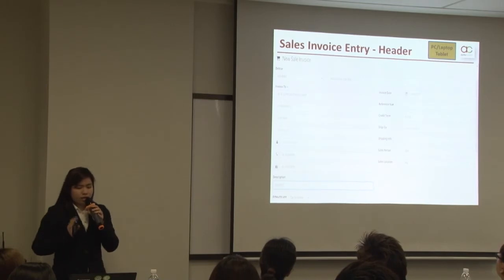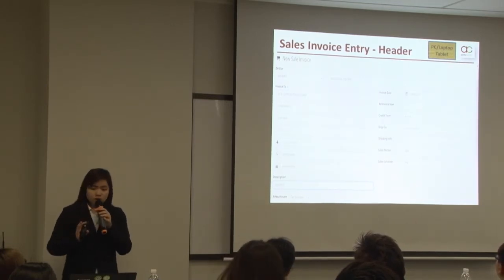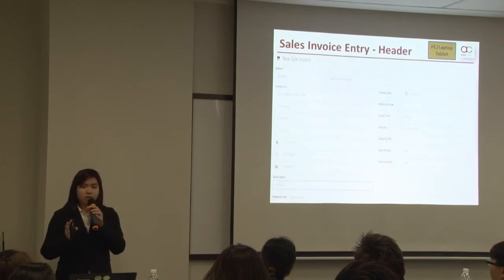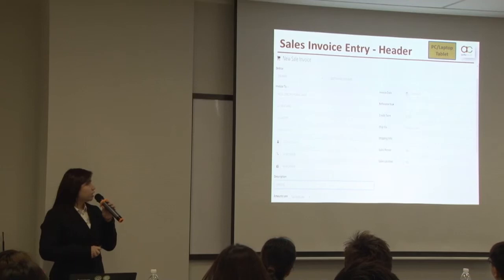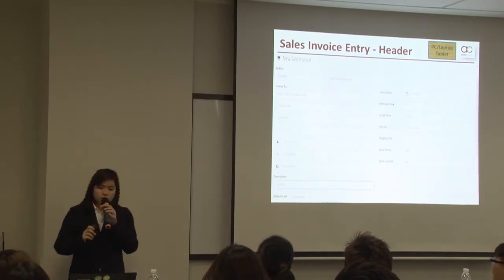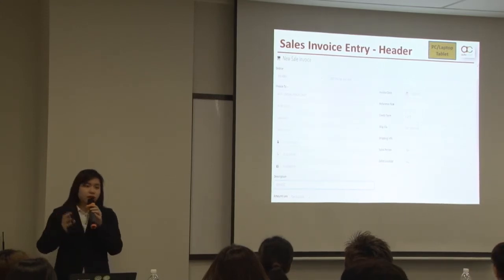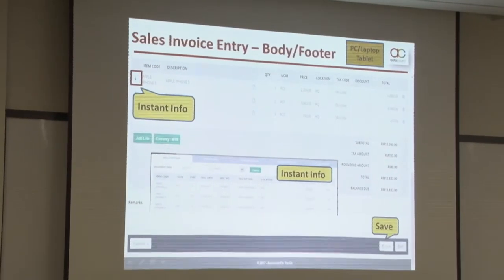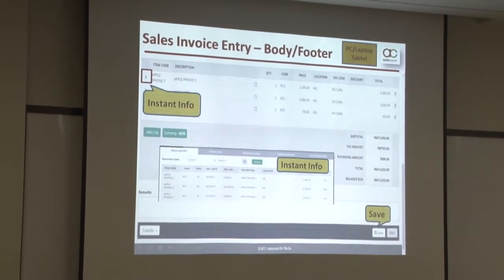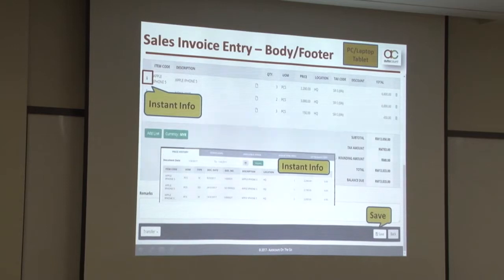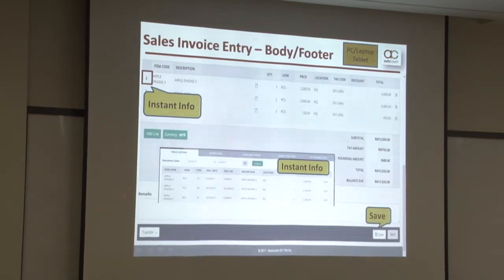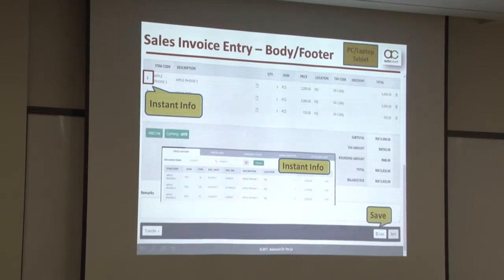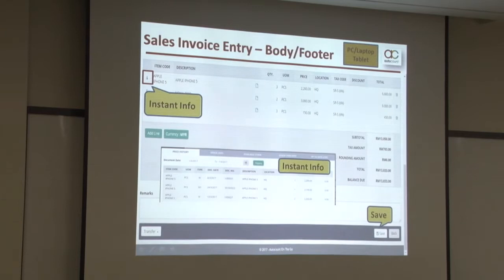This is the layout of the Sales Invoice — one of the sales documents. When you log in to AOTG using your PC, laptop, or tablet, this is the layout. This is the header of the Sales Invoice, which is the same as in AutoCount Accounting. The body is for you to select the item, key in the price, and also the quantity. When you click on Instant Info, the Instant Info window will pop up — this function is very useful, and it's also available in AOTG.